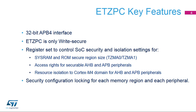The key features of the TrustZone Address Space Controller are: 32-bit APB4 interface; ETZPC is only write secure; register set to control SoC security and isolation settings for SysRAM and ROM secure region size, TZMA0 and TZMA1; access rights for securable AHB and APB peripherals; and resource isolation to the Cortex-M4 domain for AHB and APB peripherals.